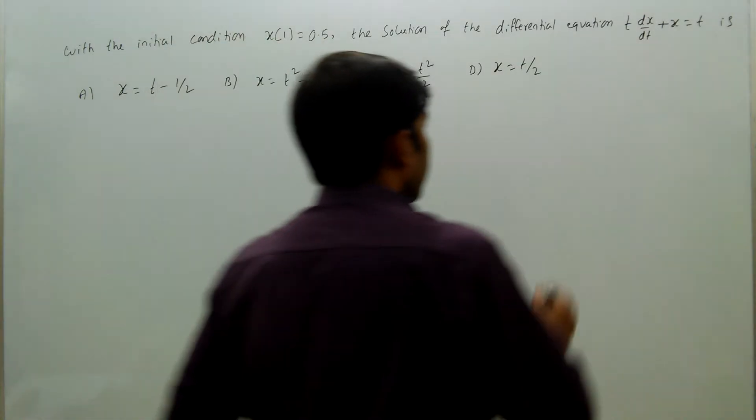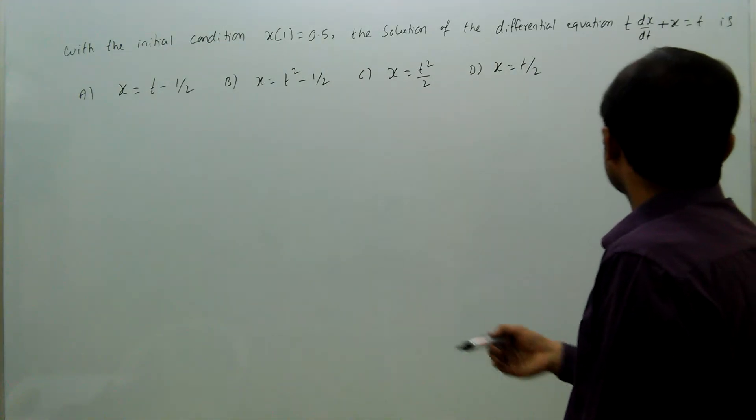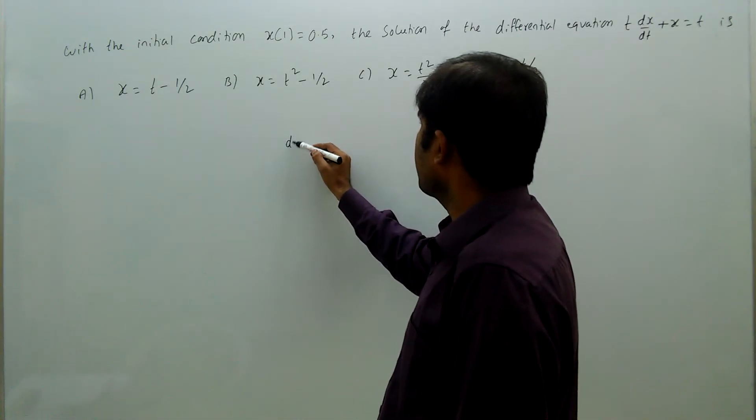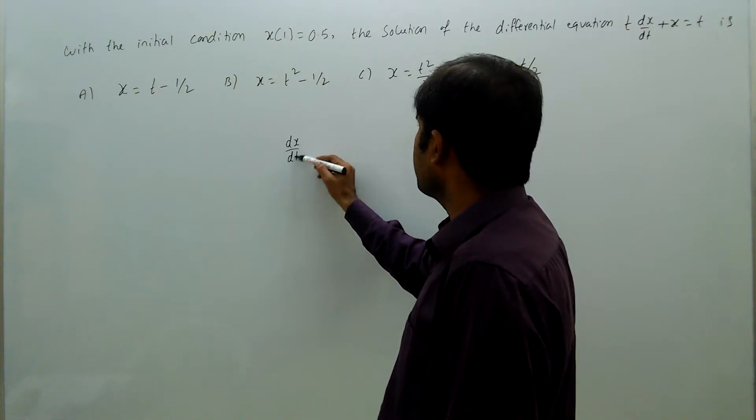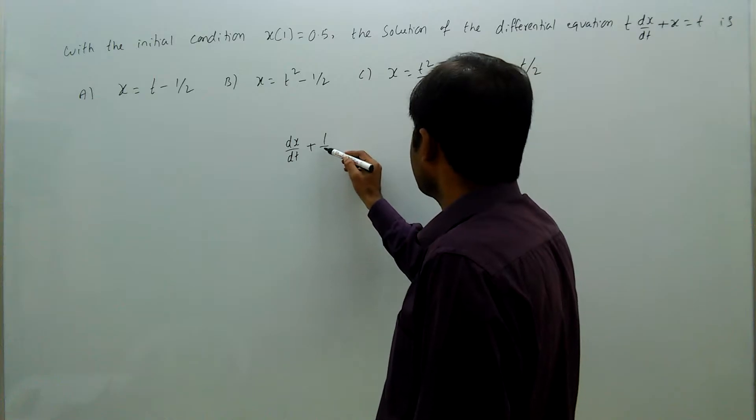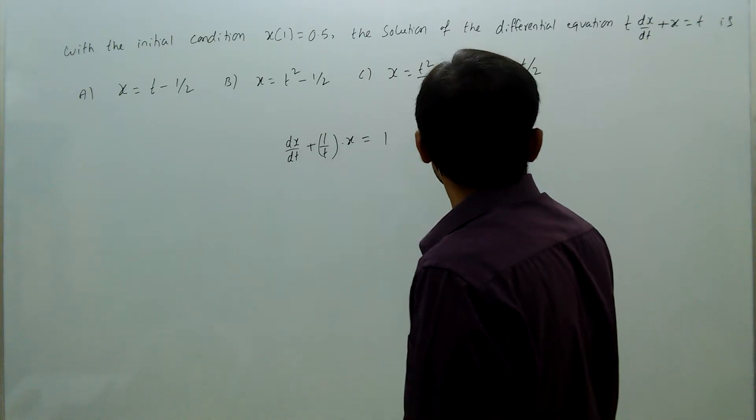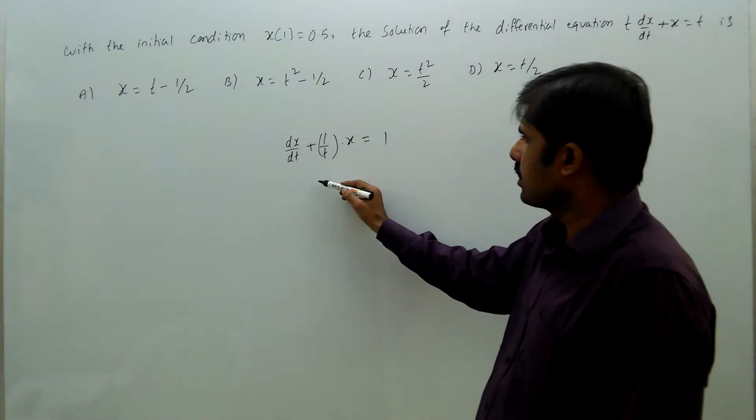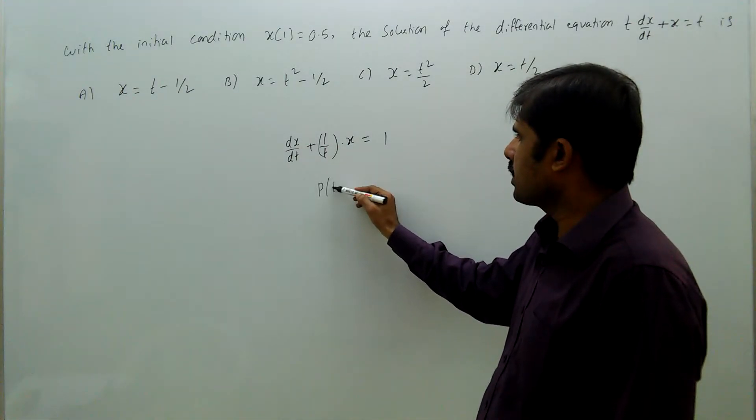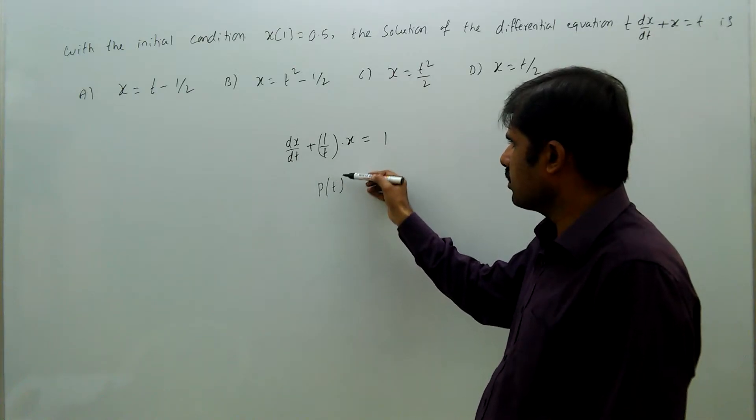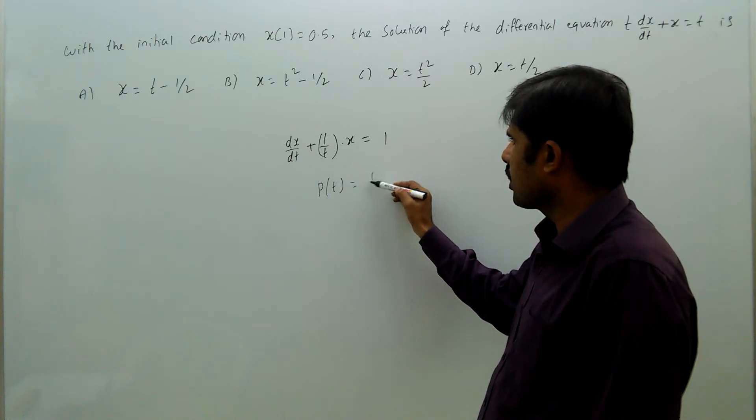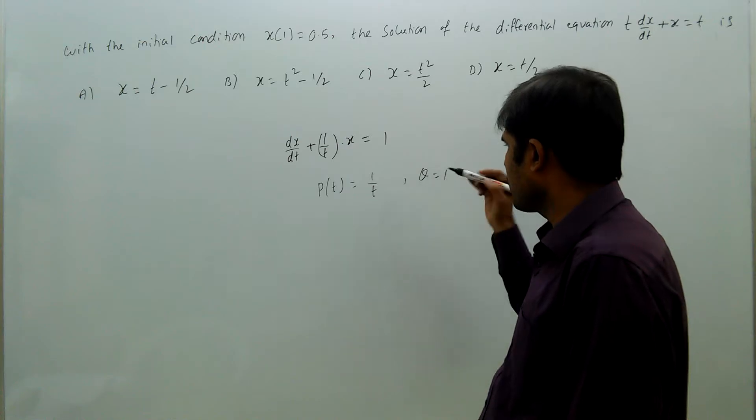By close observation, we can tell that this is a linear equation because divided with t, dx by dt plus 1 by t into x equal to 1. Here, p of t equal to 1 by t and q equal to 1.